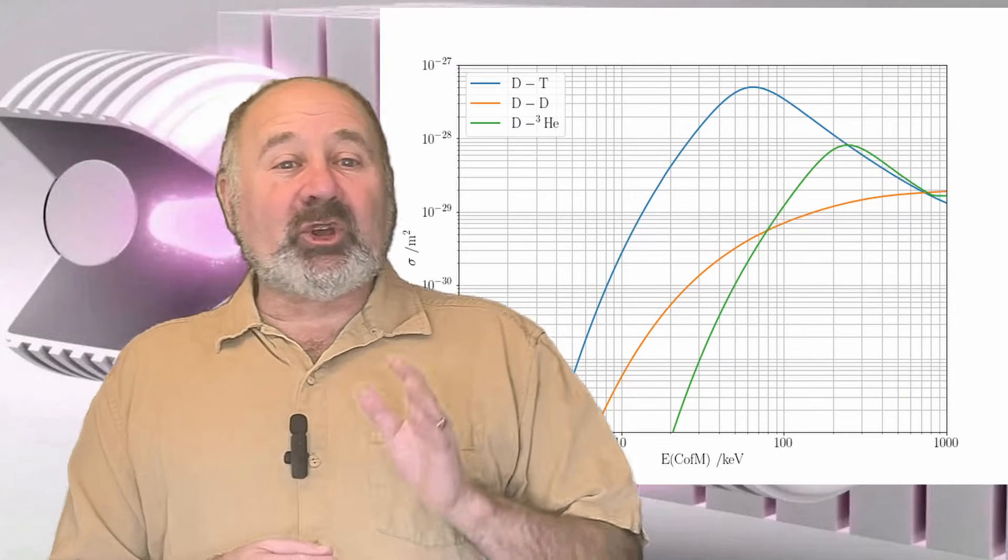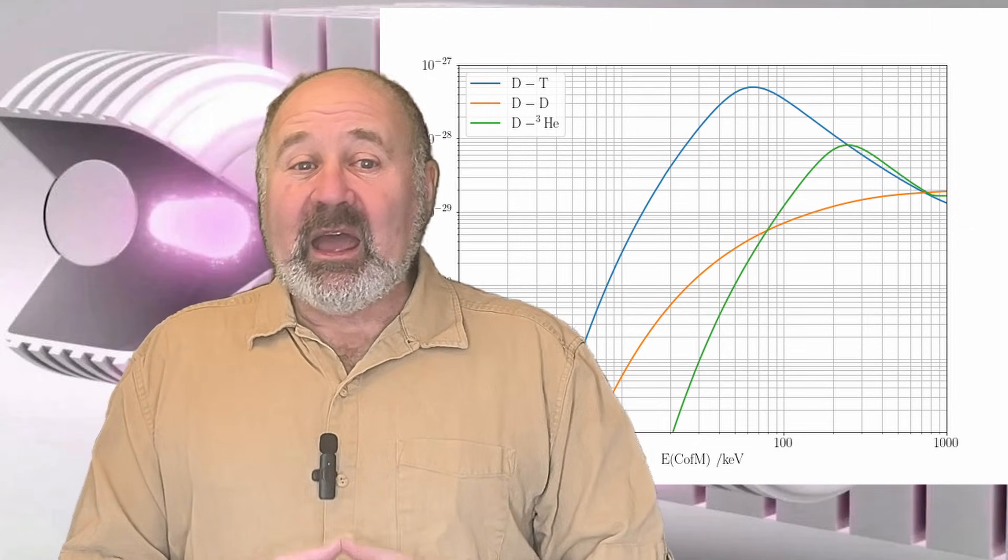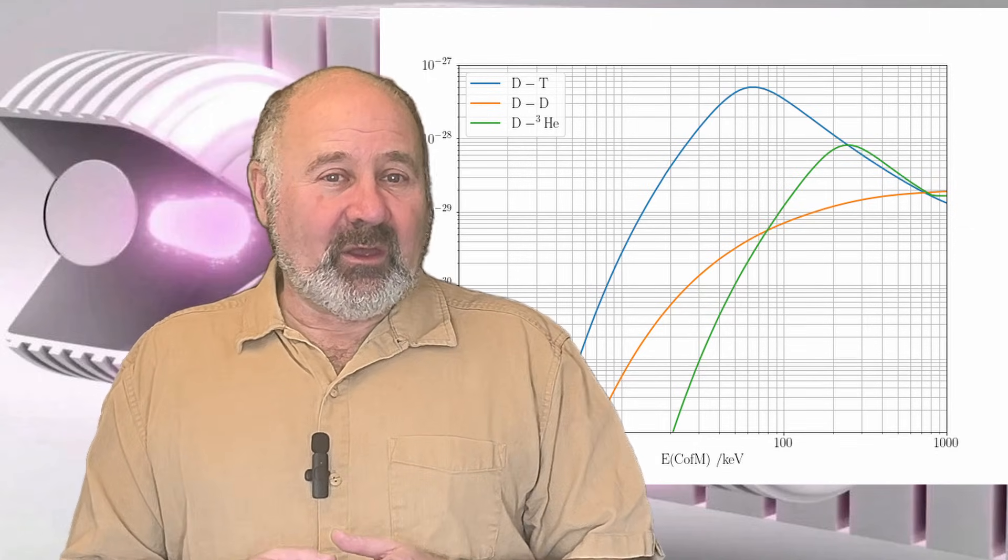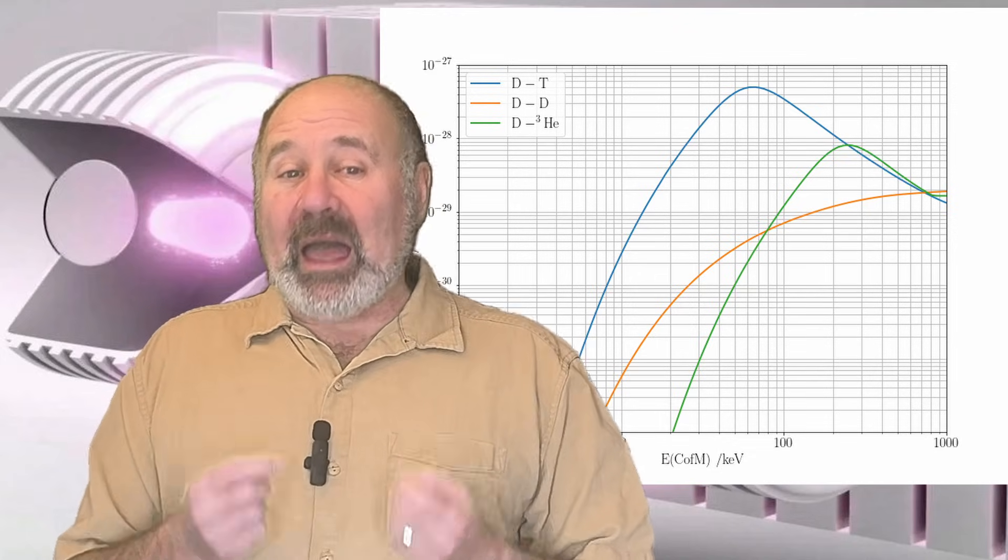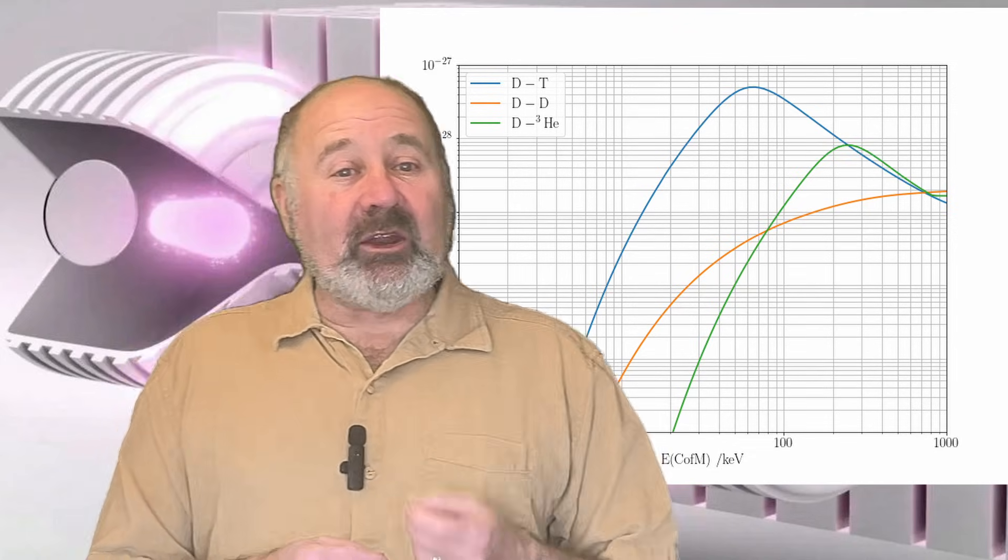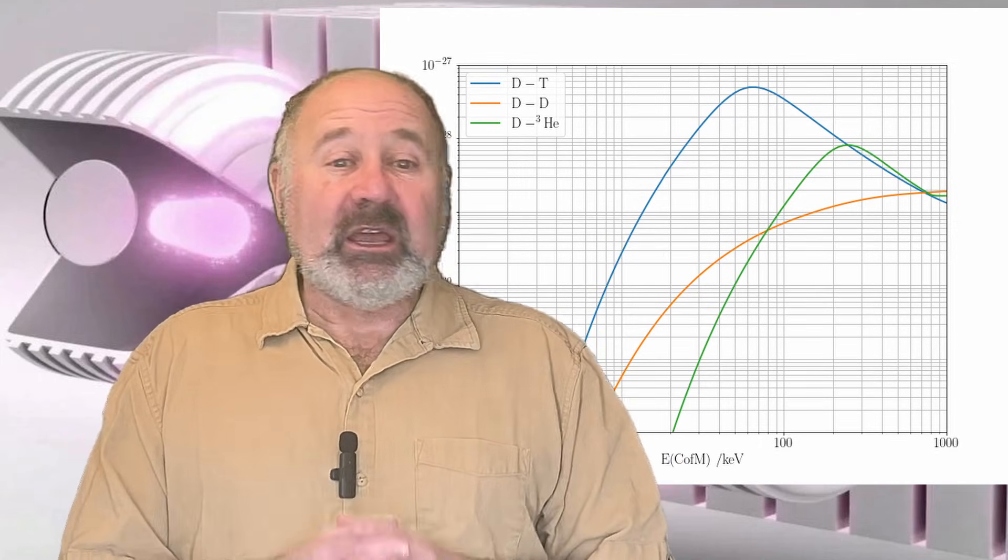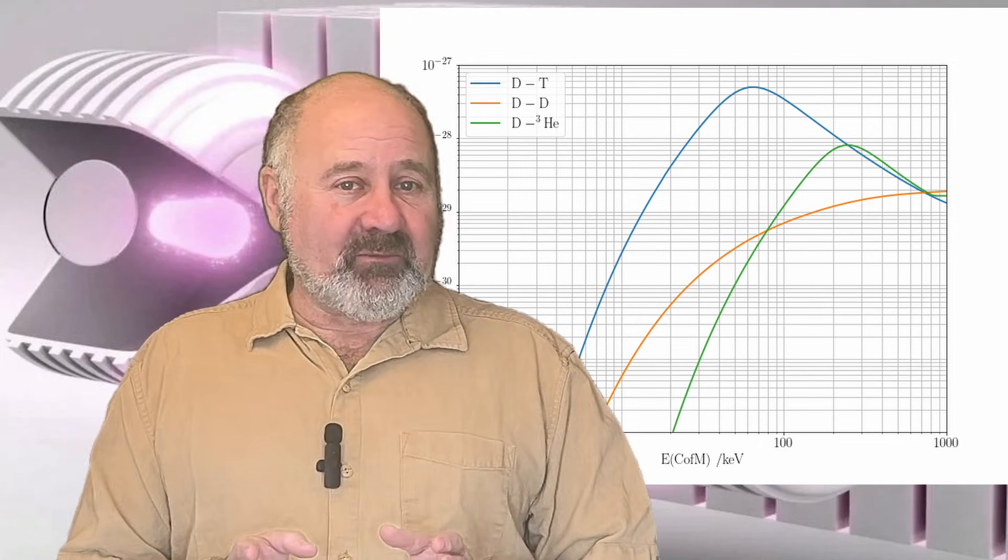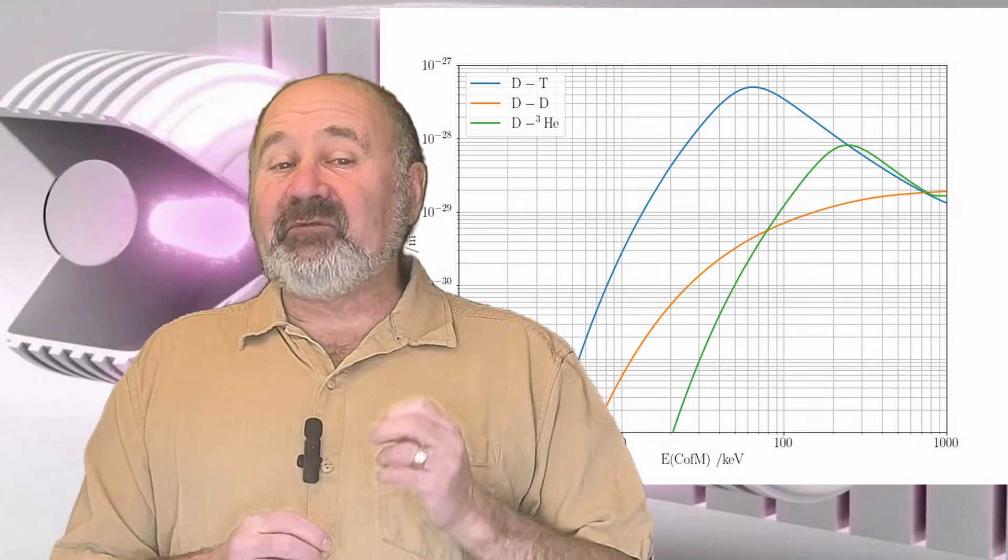Let's look at a plot that shows what Helion is up against. It's the cross-section of the three fusion reactions that we've been talking about as a function of energy. The cross-section is a measure of the probability that fusion will happen with particles at this energy. This is a log plot, which means that each tick is a factor of 10.